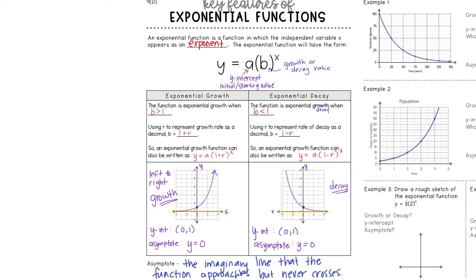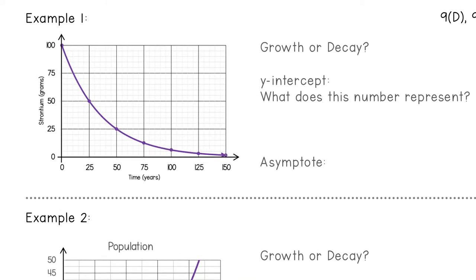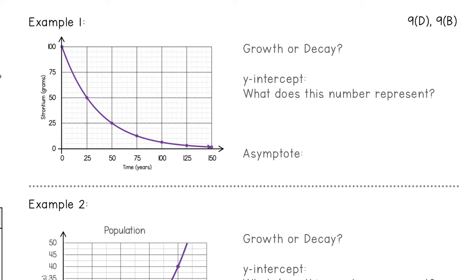So now I want to do a few examples. We're going to look at graphs that pertain to the real world. So example number one. So just by looking at that graph, is it growth or is it decay? This one is decay because when I read the graph from left to right, it is going down.